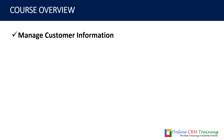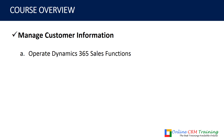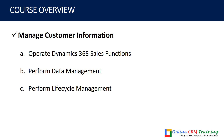The final topic is manage customer information. First, you will learn how to operate Dynamics 365 Sales functions — identify and define the functional areas of Dynamics 365 in the sales module, model relationships and records, access Dynamics 365 through various client methods, and utilize the help center. Next, you will learn how to perform data management — create customers and contacts, enforce customer relationships using activity types, and use views and global searches. Finally, you will learn how to perform lifecycle management — how to utilize leads, convert leads into customers through the lead lifecycle, perform opportunity management, and manage cases.